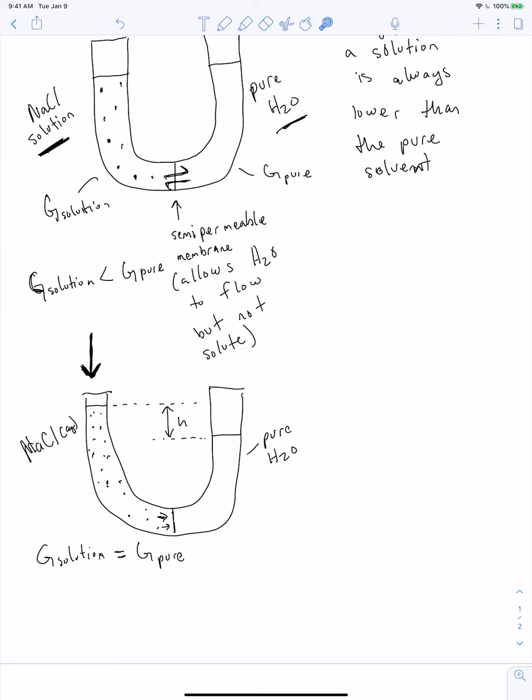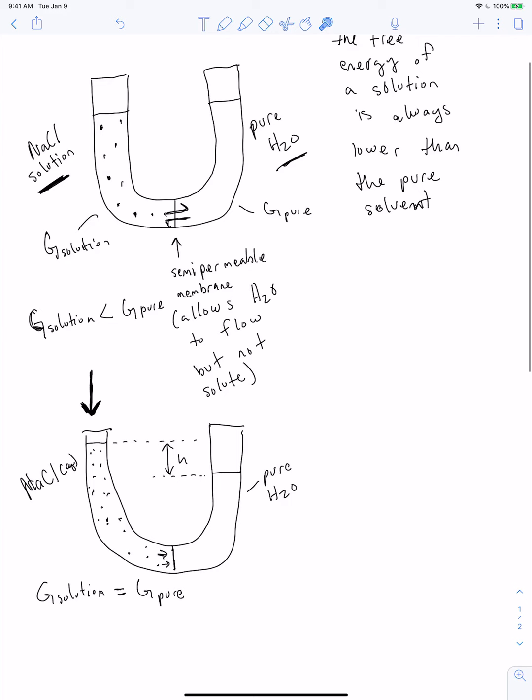So ultimately, if we wanted to put it succinctly, the system starts out in a non-equilibrium state. And there's this imbalance where the free energy is lower on this side than it is on this side. And so in order to equilibrate, the pure water side flows through that semi-permeable membrane and dilutes out the salt, which increases its free energy and allows you to get to this equilibrium state.